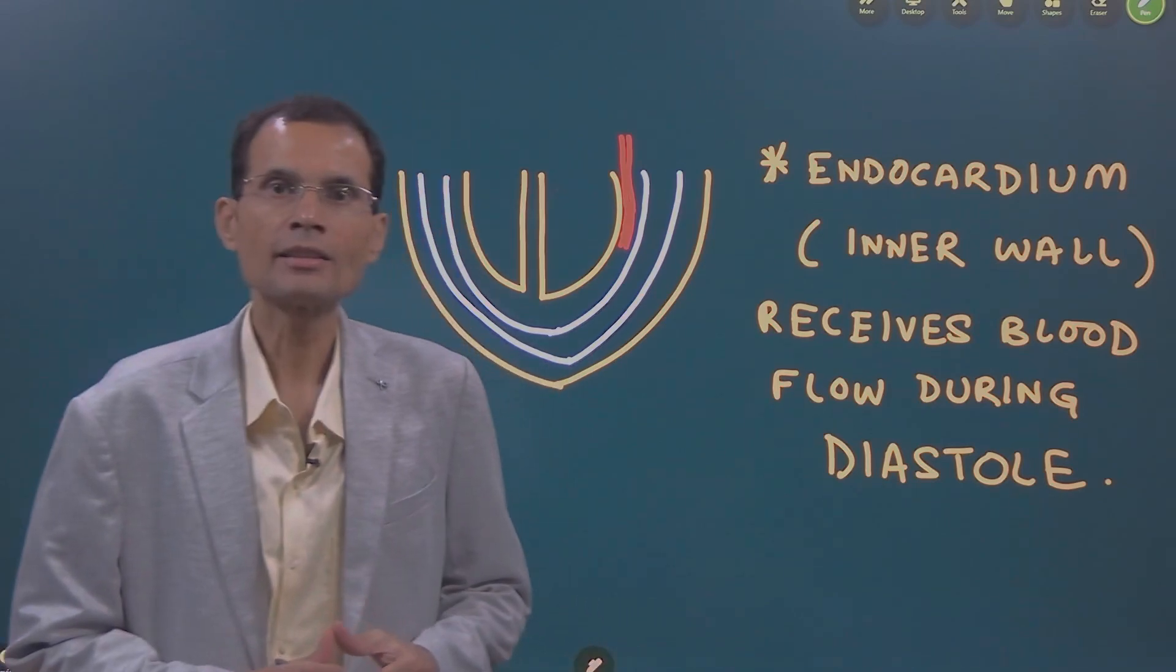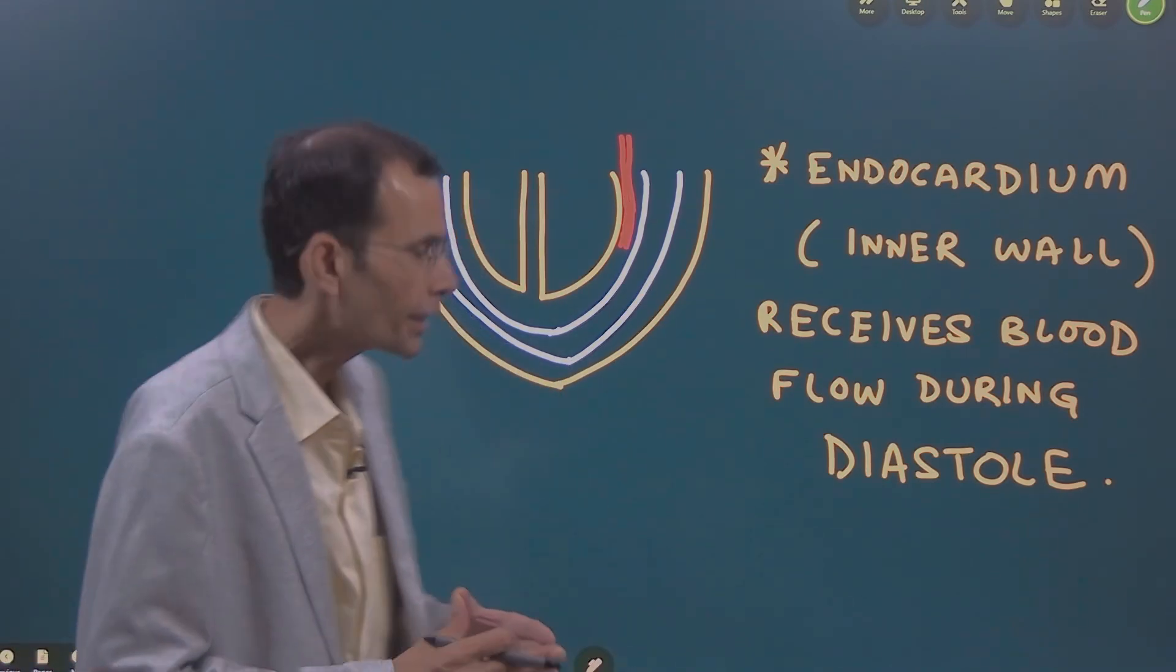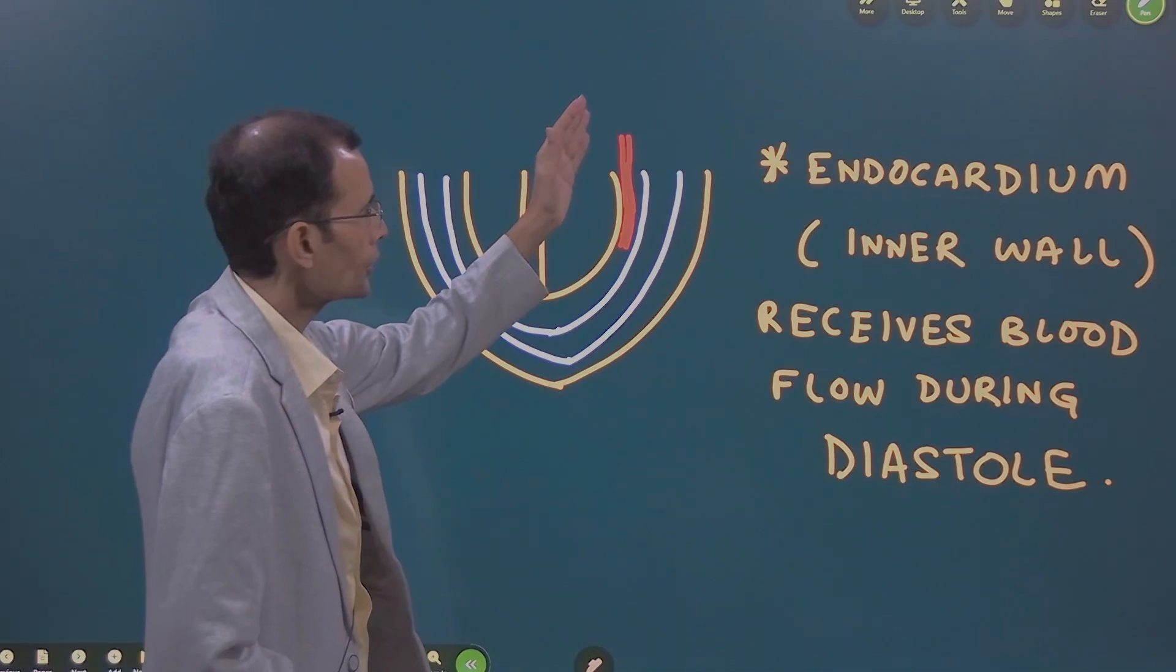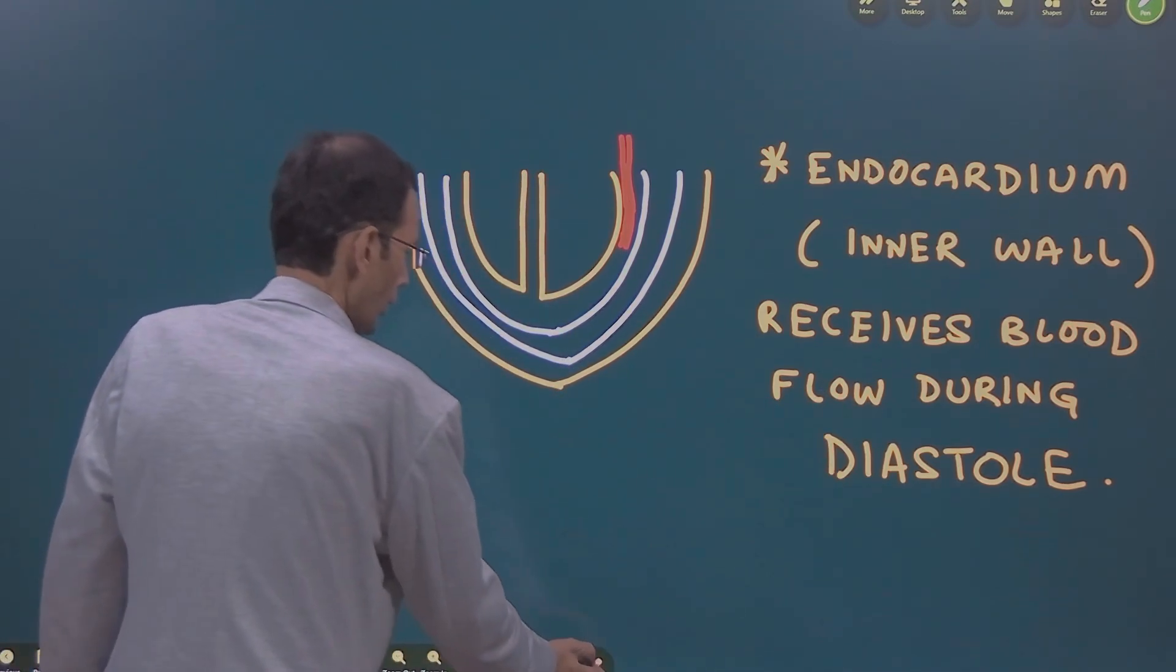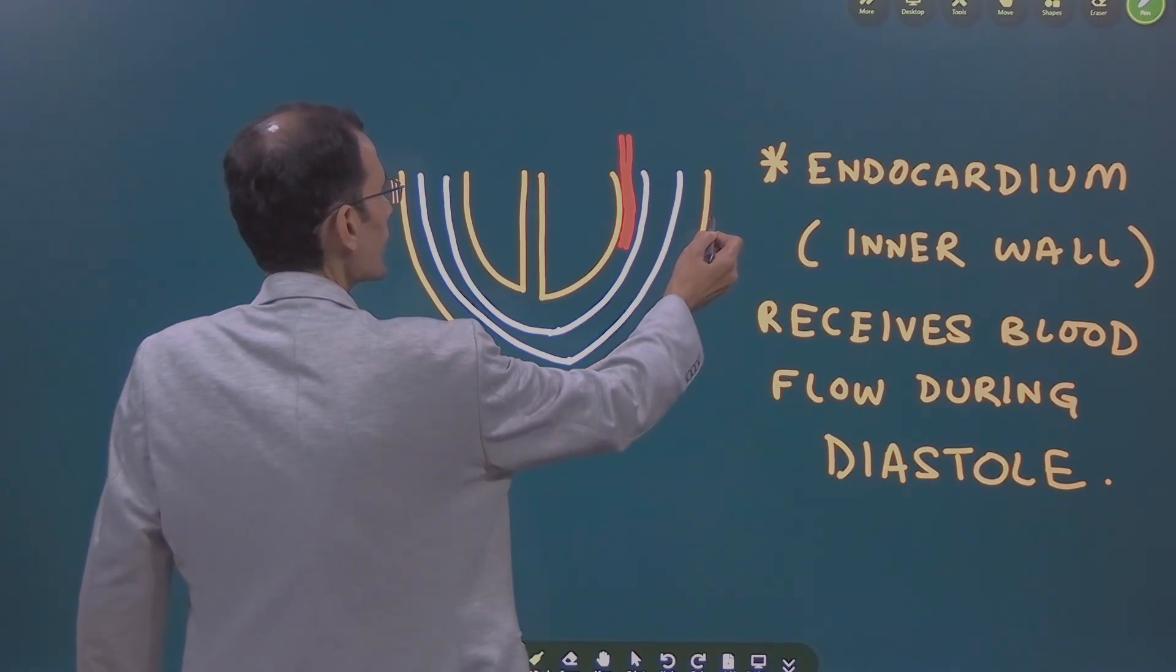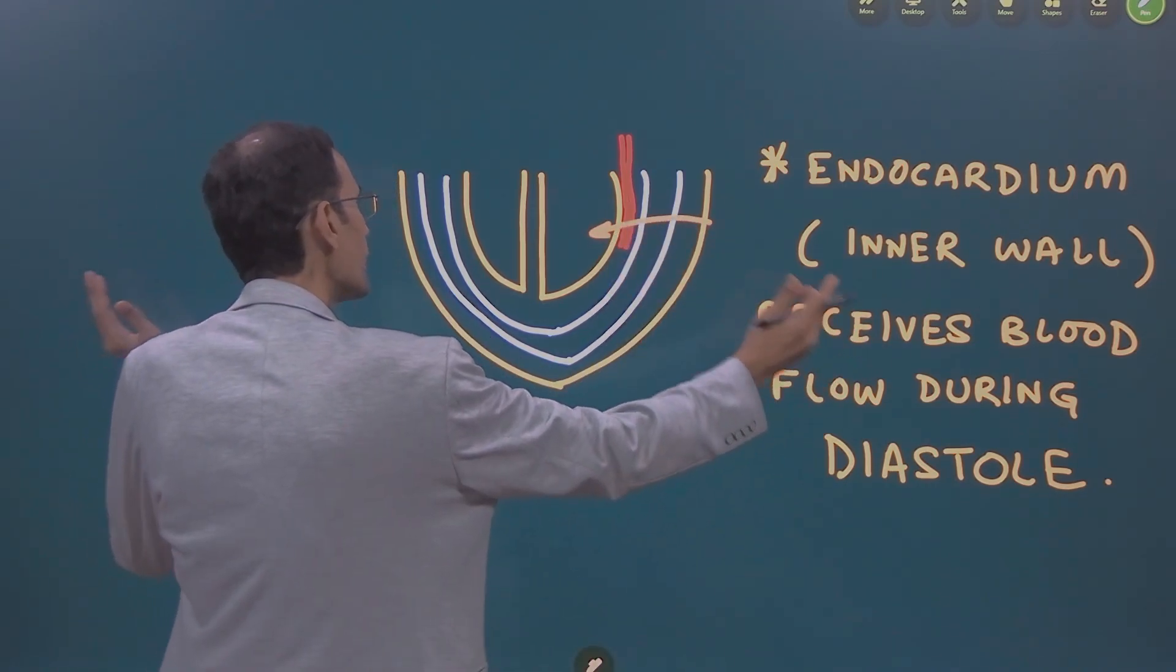First thing is about the endocardium, the inner wall of the heart. You know, when the heart goes in systole, it compresses inward. The contraction is like this.